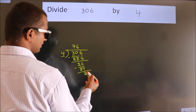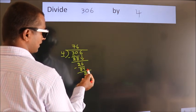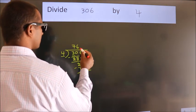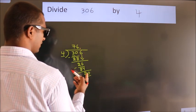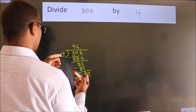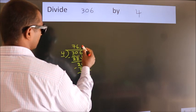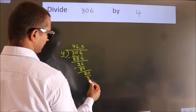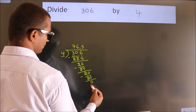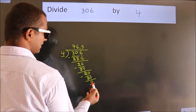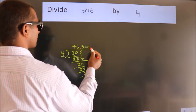After this, no more numbers to bring down. So what we do is put a dot and take 0. So 20. When do we get 20? In 4 table: 4×5=20. Now we subtract. We get 0. We got remainder 0. So this is our quotient.